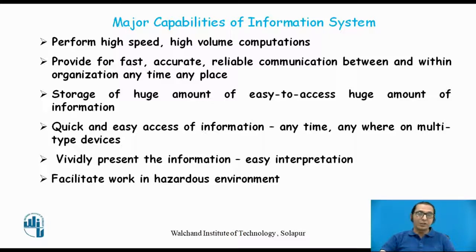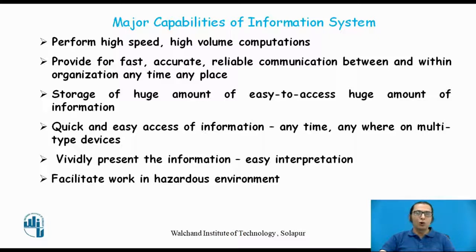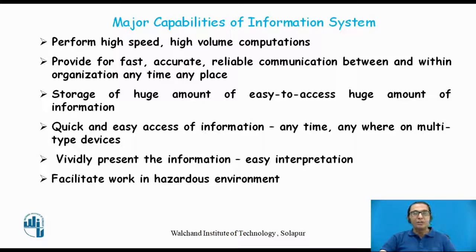As we use computers for processing our data, the information system itself is very high-speed and high-volume. Computers and servers are equipped with a high volume of storage capability, and that is why the information system can also store very high volumes of data and information. They provide fast, accurate, reliable communication between and within organizations, anytime, any place. As soon as I withdraw money from an ATM, I immediately get a message — that is very fast. As information systems are processed by computers, there cannot be mistakes done by the computer. There can be bugs, but as long as no bugs exist, these information systems are very accurate and reliable.